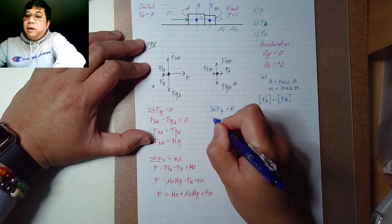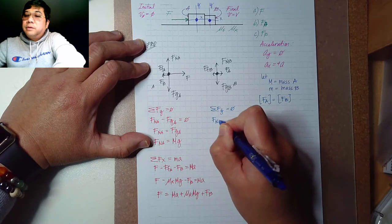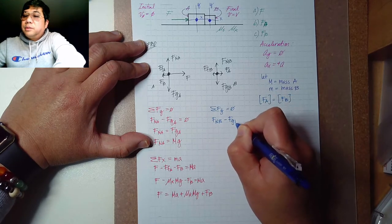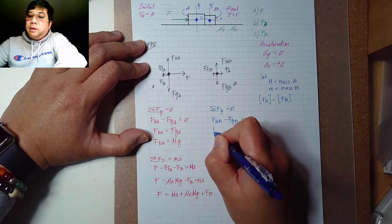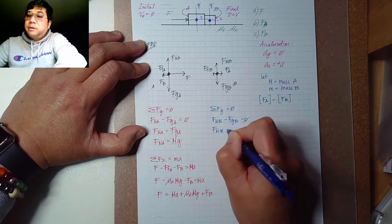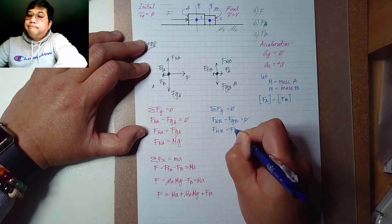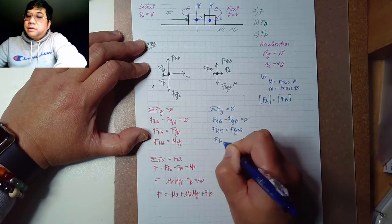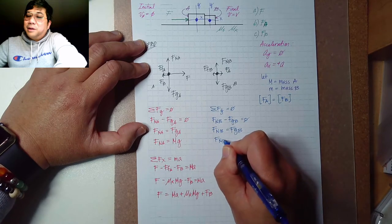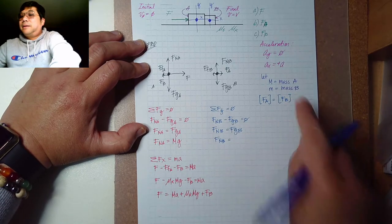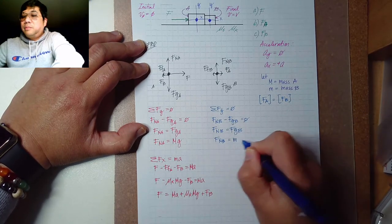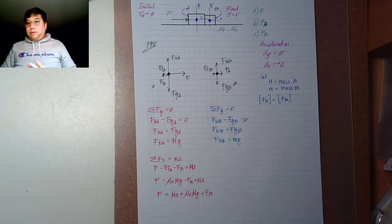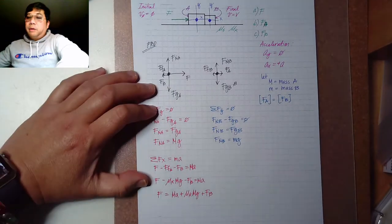For block B, the summation of forces along the y-axis is zero: the normal force of B minus the gravitational force of B equals zero, so the normal force of B equals the gravitational force of B, which is lowercase m times g.